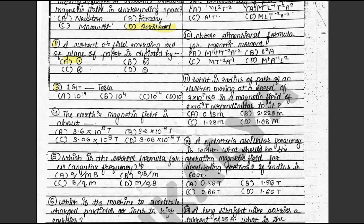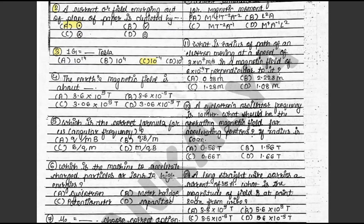Question 3: 1 Gauss is equal to dash Tesla. The answer is C: 10 raised to minus 4. This is on page 135. Question 4: The Earth's magnetic field is about dash. The answer is B: 3.6 × 10⁻⁵ Tesla. This is on page 135.